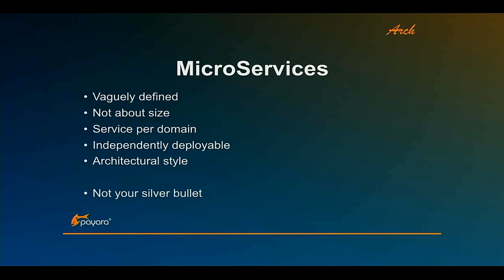You hear a lot about microservices, and that's not code — that's just an architectural style. How you create your application and how you deploy it within your company. But it is vaguely defined; you find a lot of definitions which are not exactly the same. One thing it's not about is size. You see the word 'micro' in its name but it's not about size — you can easily create a microservice with 100,000 lines of code. It's about the domains. You should encapsulate all the functionality which is related to one type of domain, and it can be high level like HR or logistics, or more low level like everything related to an order or stock management. All that code needs to be kept together and deployed independently of the rest.